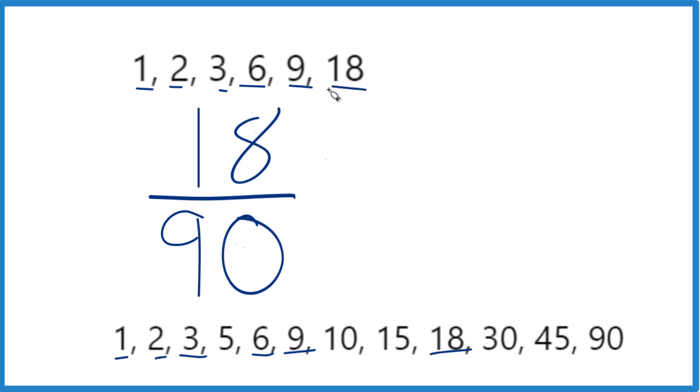So what we're going to do is divide the numerator by 18 and the denominator by 18. 18 divided by 18, that's 1, and 90 divided by 18, that is 5.